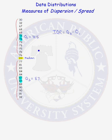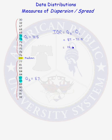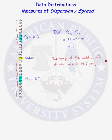Now we have everything we need to find our interquartile range. The interquartile range is the third quartile, 87, minus the first quartile of 72.5. Our interquartile range is 14.5. We can say that the range of the middle 50% of the data is 14.5 points.